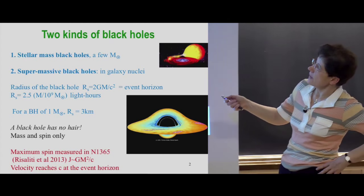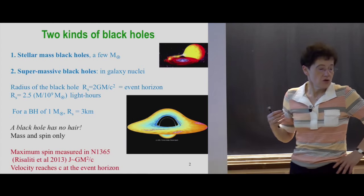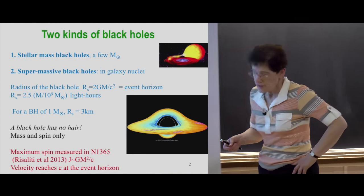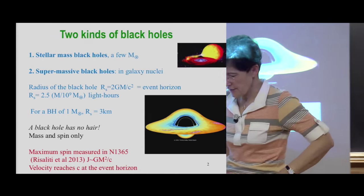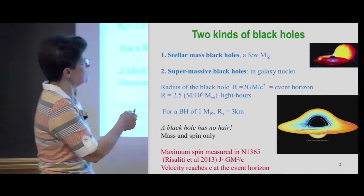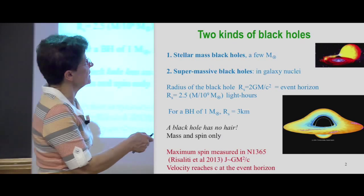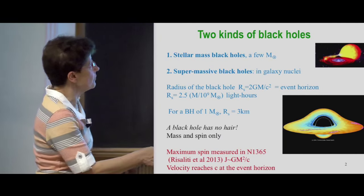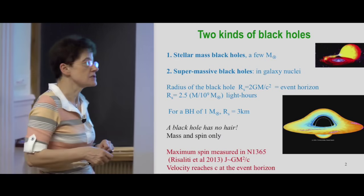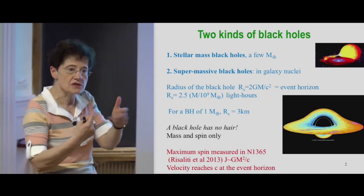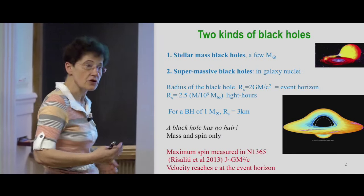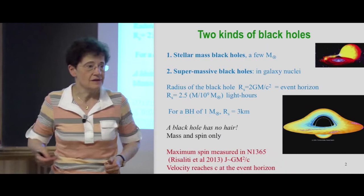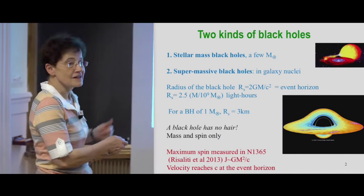There are two kinds of black holes. One is the end of life of certain stars. When they explode in supernovae and are massive enough, they become a stellar mass black hole. We can see them because, in general, stars are seen in binaries. A companion gives mass to the black hole in the accretion disc, and then it radiates a lot. So even if they are called black holes, black holes are the most bright objects in the universe, and you will see why.